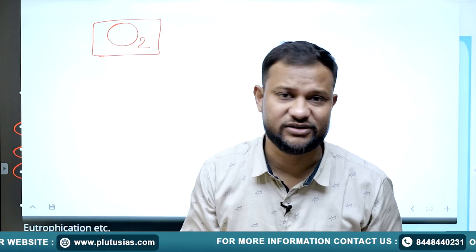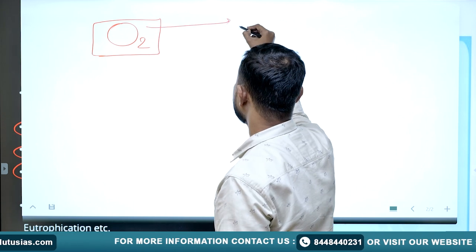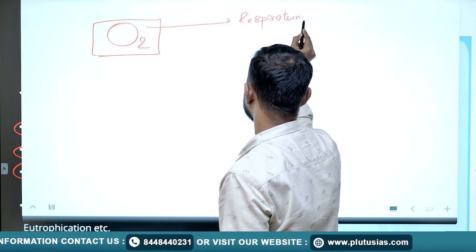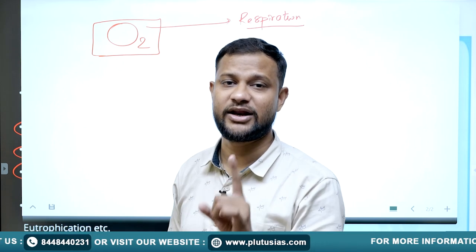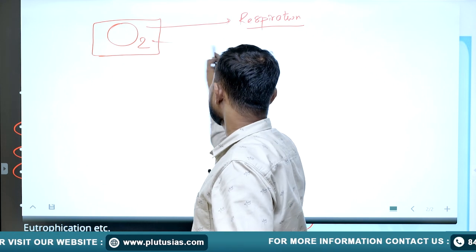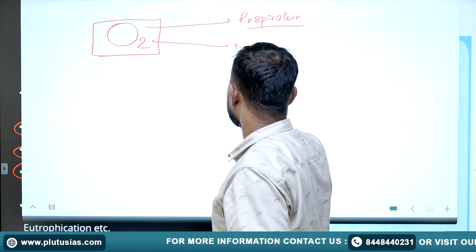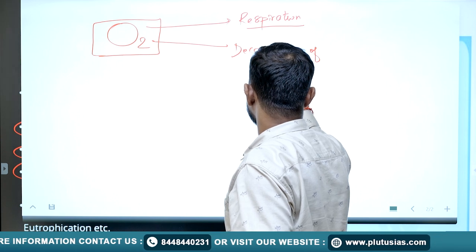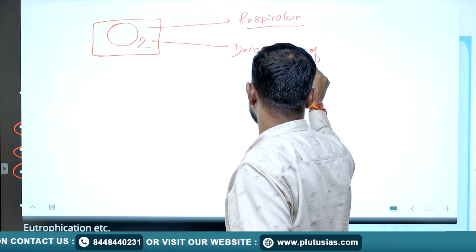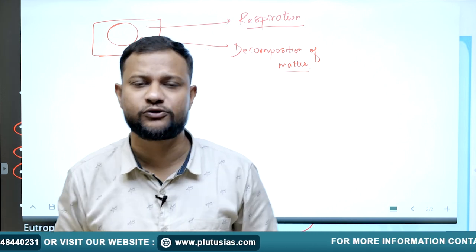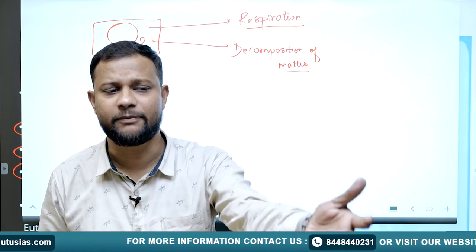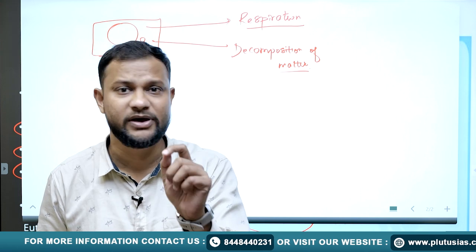Oxygen in water is used for the purpose of respiration — that is what makes it the most crucial element. Equally, oxygen is required for the decomposition of matter. Bacteria and decomposers feed on the oxygen content in the water and help keep the water clean. Apart from this, oxygen forms different molecules and minerals in the water, such as in rocks and various minerals.